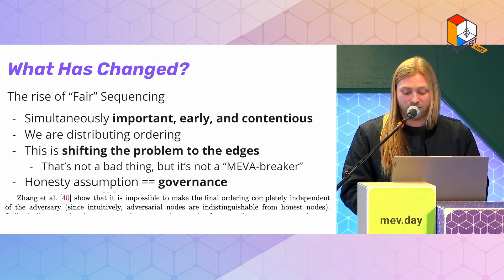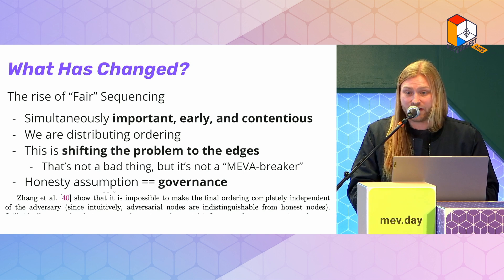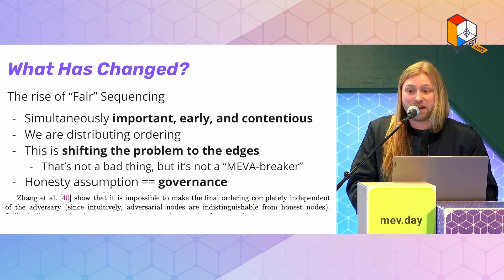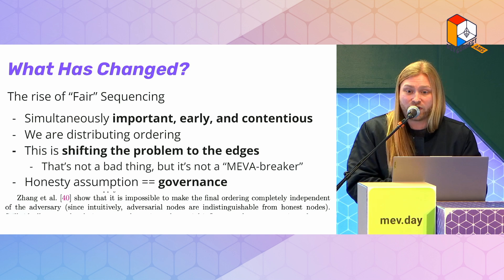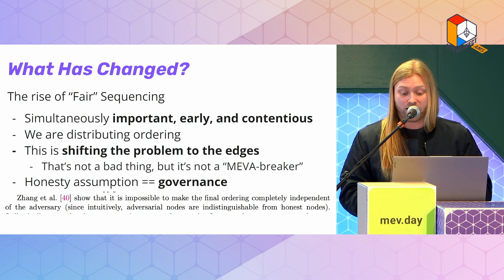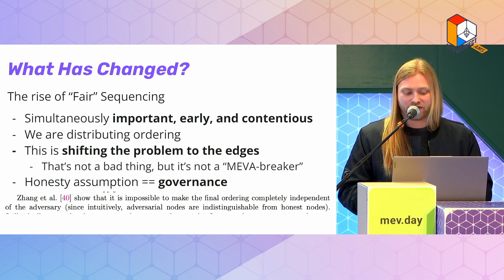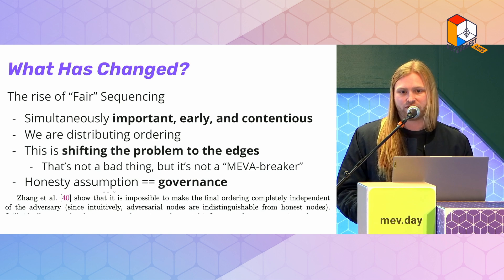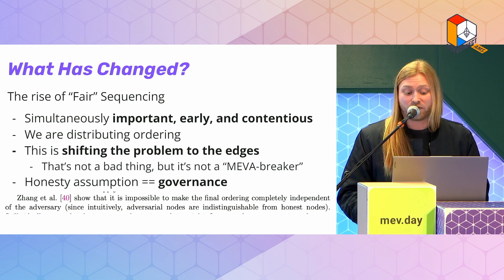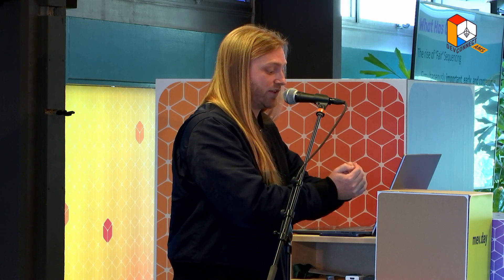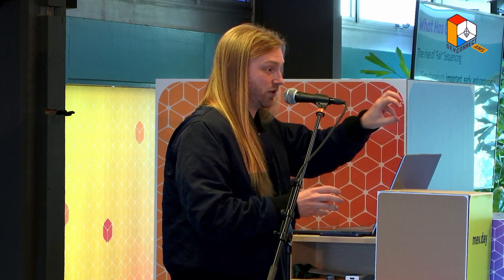We got a great overview of one of the fair sequencing models from Ed, and this is extremely important research. I will say it is also very early, and along with being important, I think it is contentious and will get more contentious. What we're doing here is distributing the ordering — we take a set of parties, have them all give an order, and combine them into one ordering. One meme to dispel: Optimism is going to do the MEVA thing and others will do fair sequencing and you have to choose. That's not the case. Fair sequencing is a good way to reduce some classes of MEV, but the two are not incompatible.